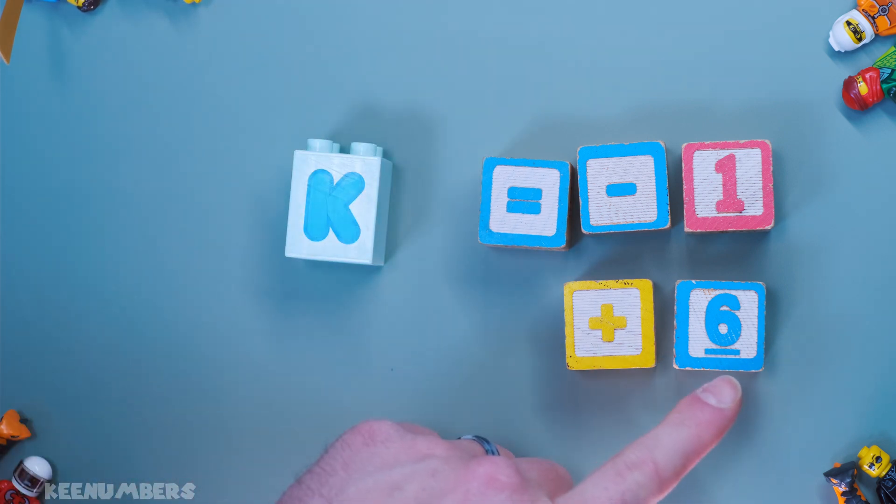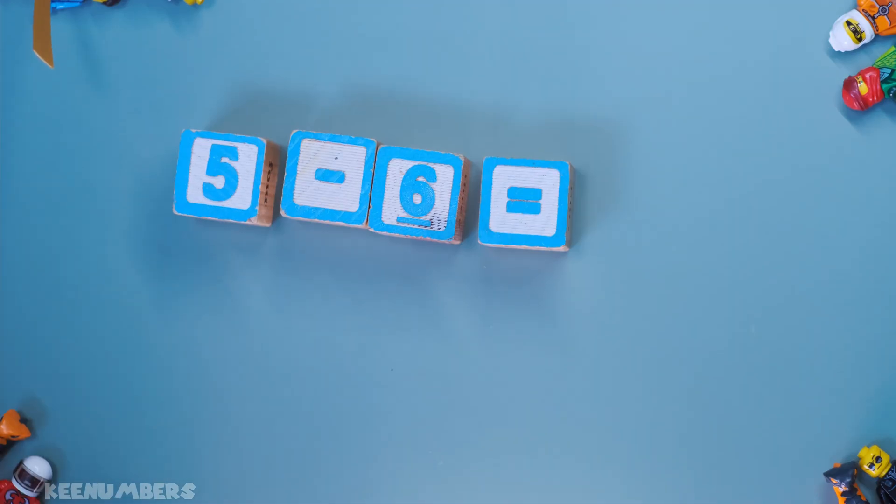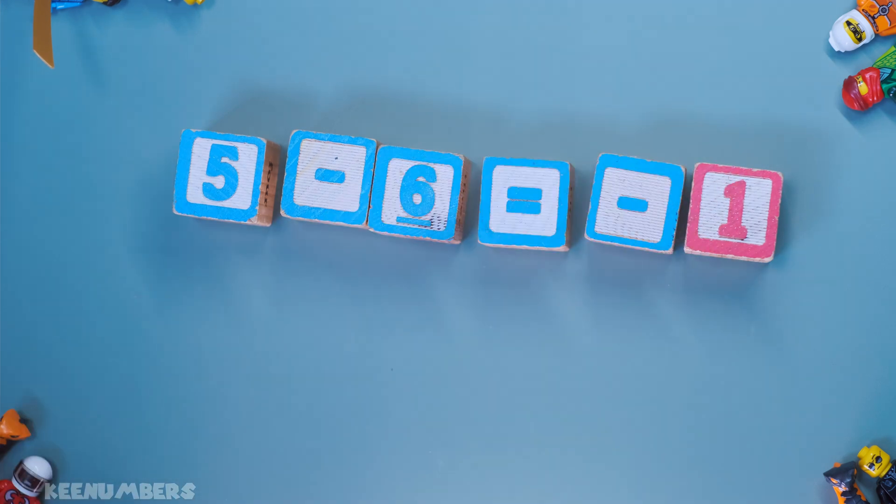What do you have left? You have six minus one. But that's not scary. Six minus one, you take away one from six, you just get good old five. And indeed, you can see that five minus six is equal to minus one when you check the original equation.